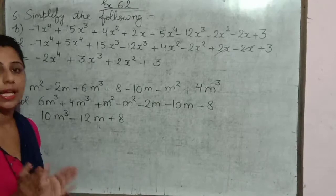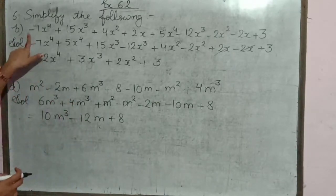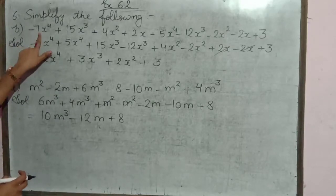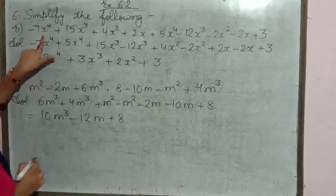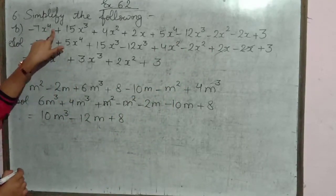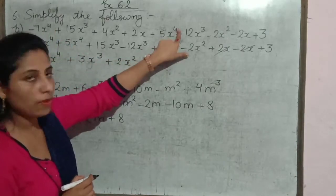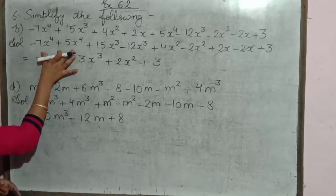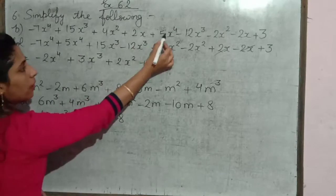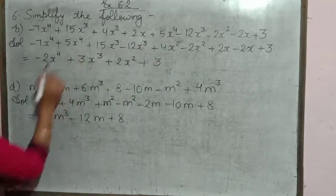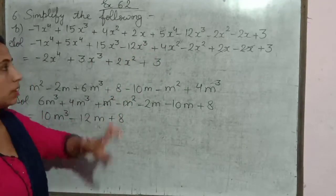Jo bhi yahan pe like terms hain, aap humein ek saath solve karenge. For example, first term is minus 7x raised to power 4. Toh aapne complete expression mein dekhna hai, jahan bhi x raised to power 4 hai, woh iske saath solve hoga. Toh hum dono like terms ko ek saath write kar denge: minus 7x raised to power 4 plus 5x raised to power 4.